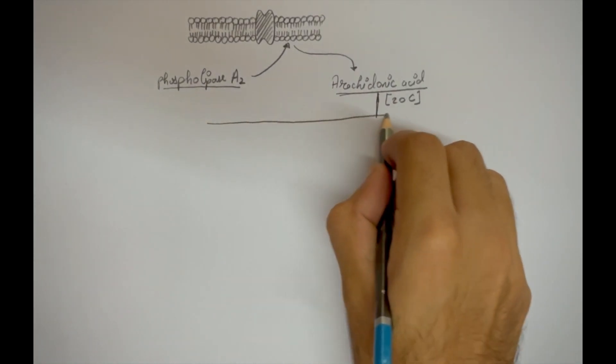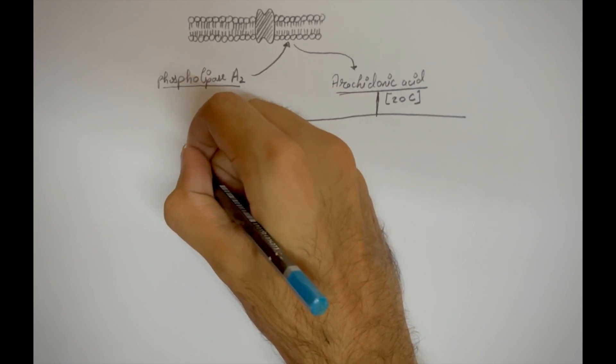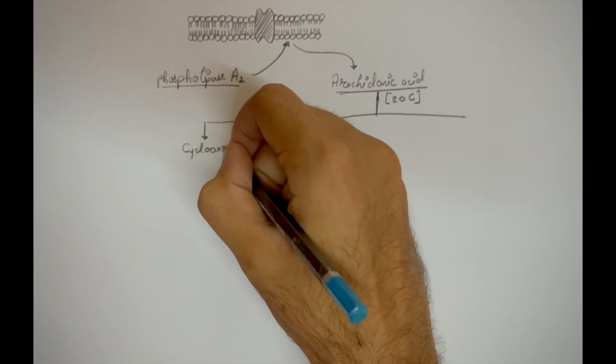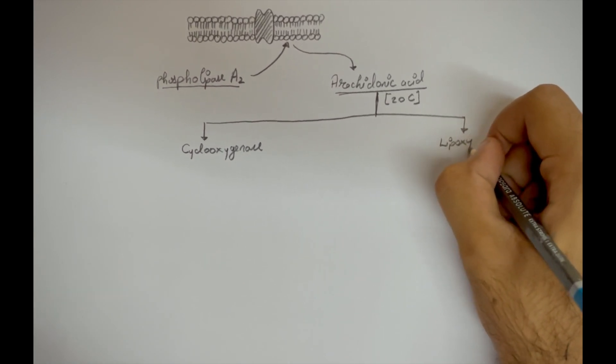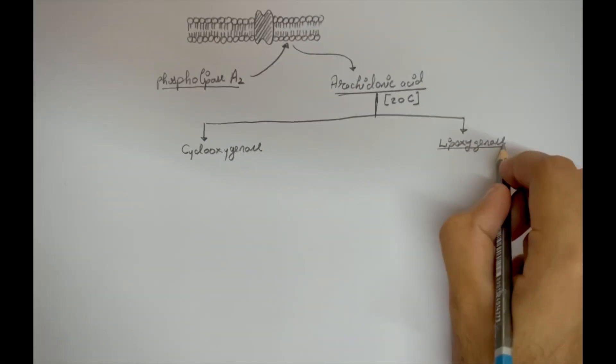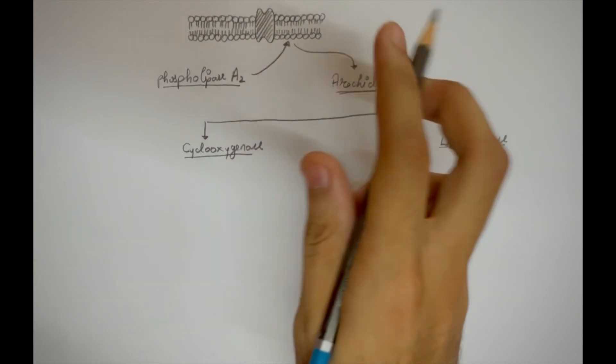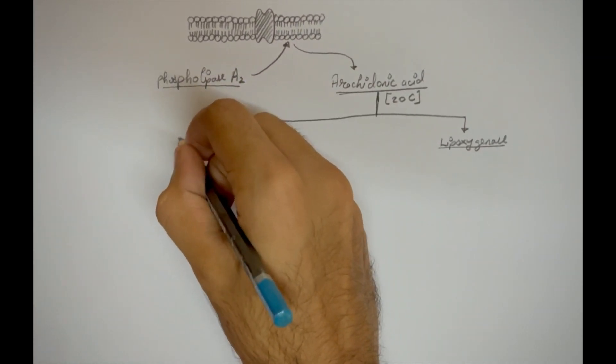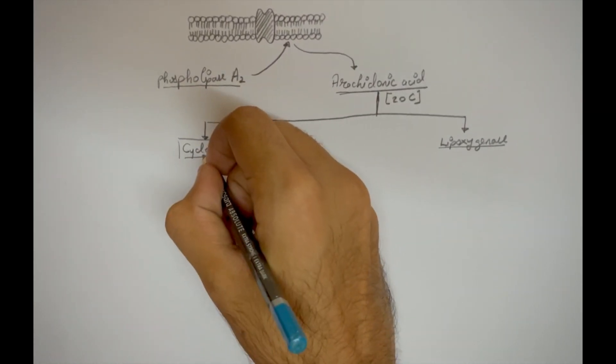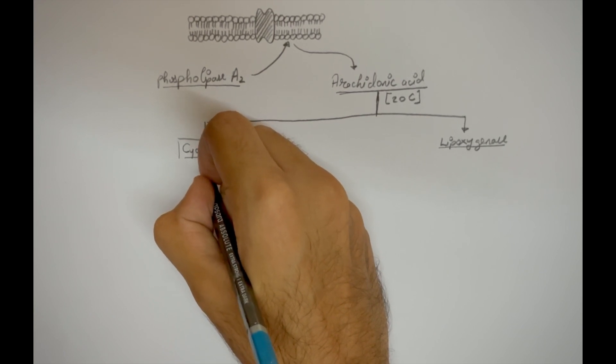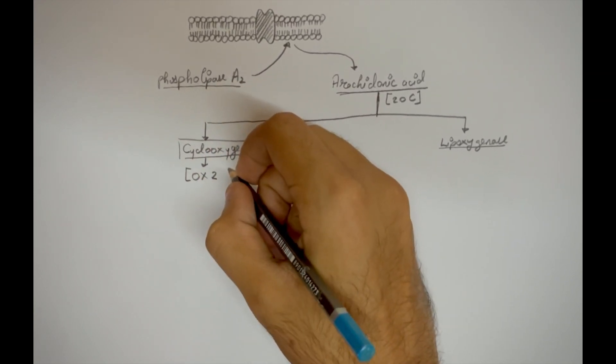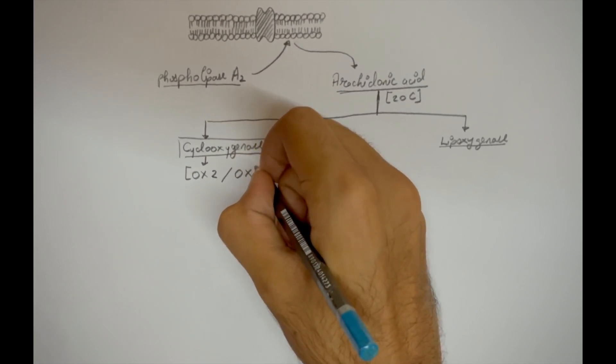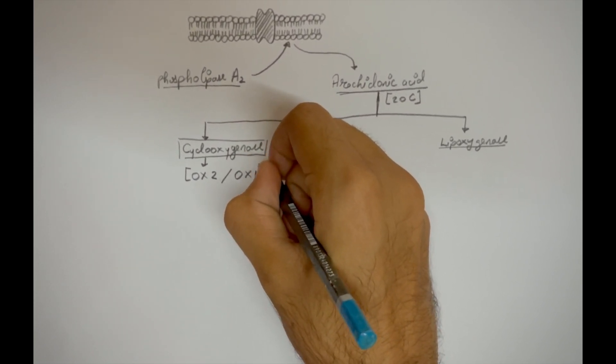Arachidonic acid can now undergo two pathways: cyclooxygenase and lipooxygenase. Talking about the cyclooxygenase pathway, the cyclooxygenase enzyme exists in two isoforms, COX2 and COX1. Cyclooxygenase 2 is a luxury enzyme, and COX1 is a housekeeping enzyme.